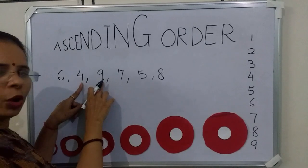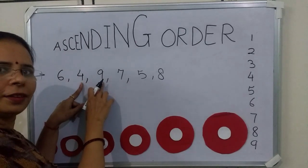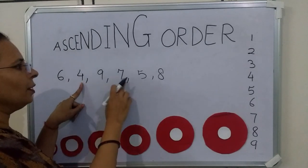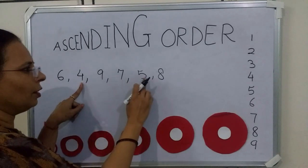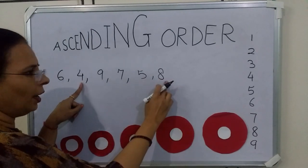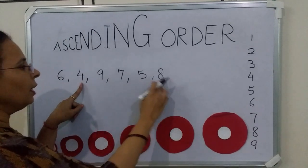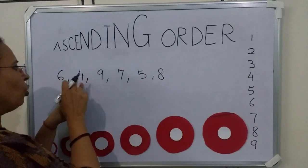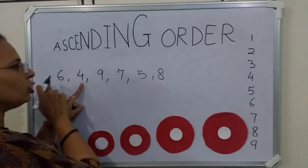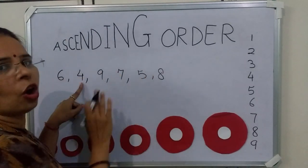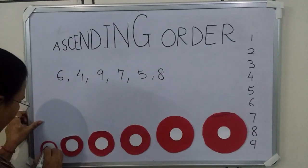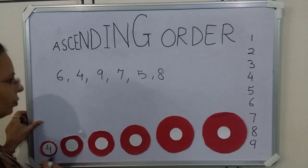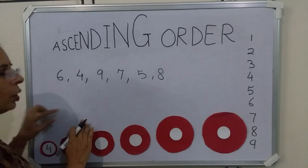Is 4 smaller than 9? Yes. 7? Yes. 5? Yes. 8? Yes. It means 4 is smaller than all these numbers. So first we will write 4.